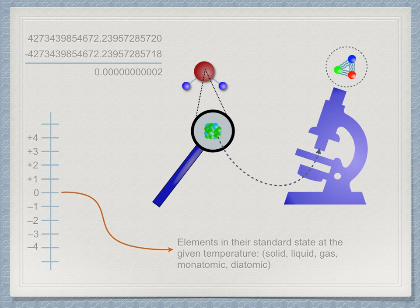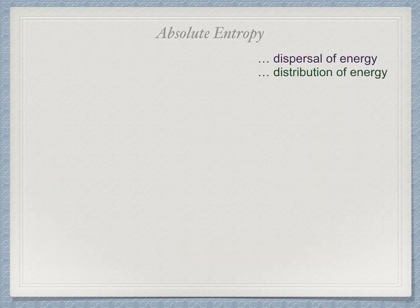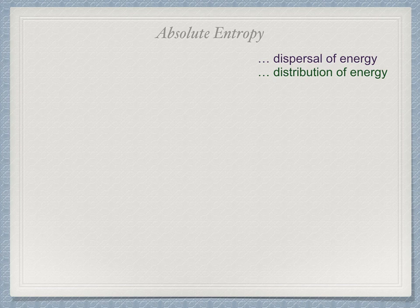Entropy, however, is different. Entropy is not energy. It is the dispersal or distribution of energy. And as such, we are able to find a convenient and absolute zero for entropy.